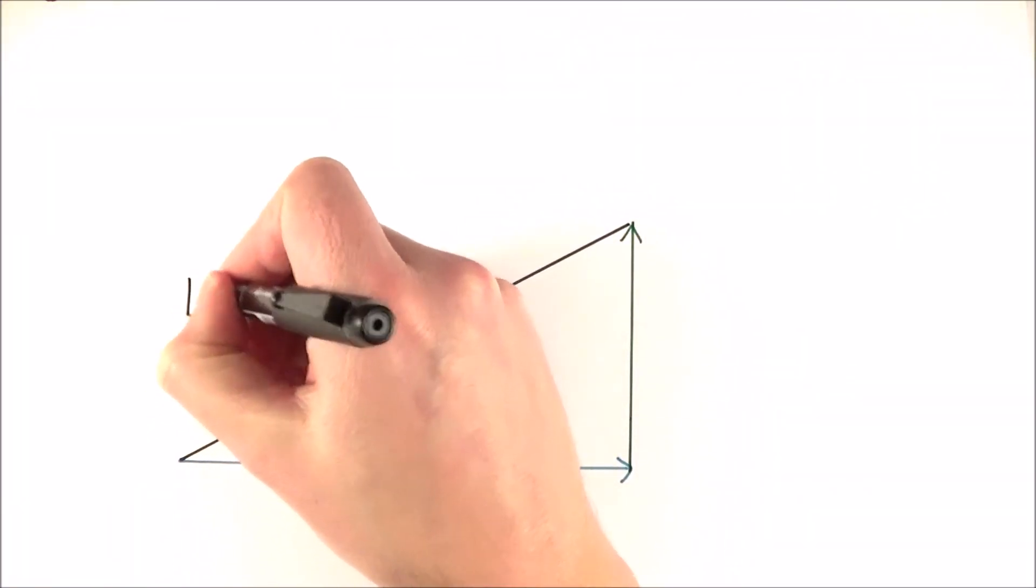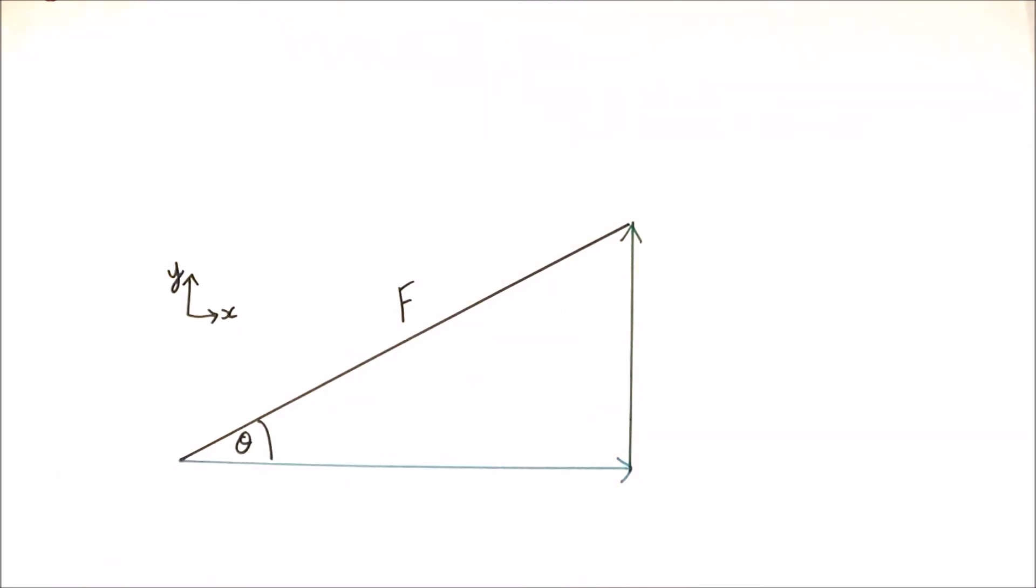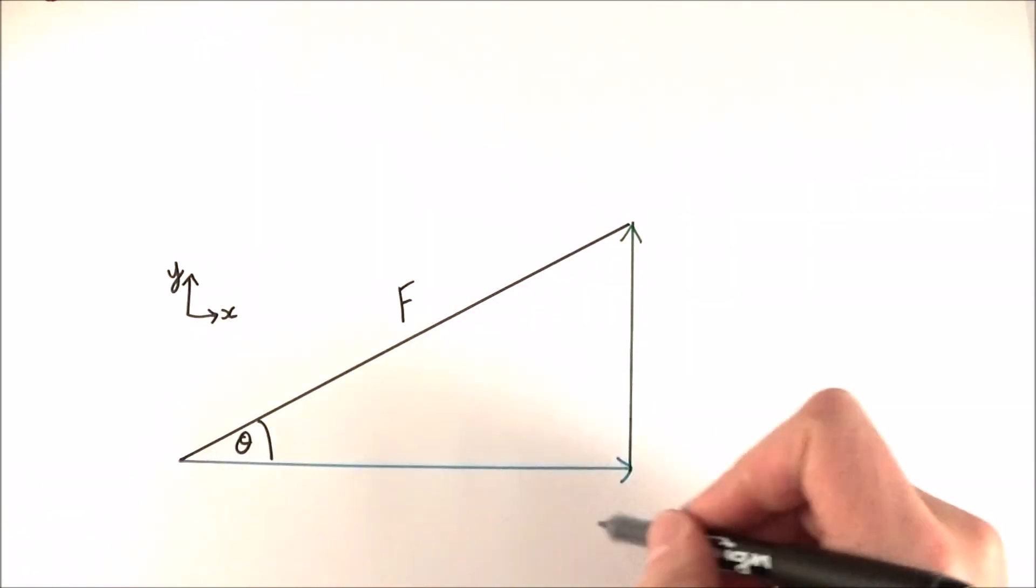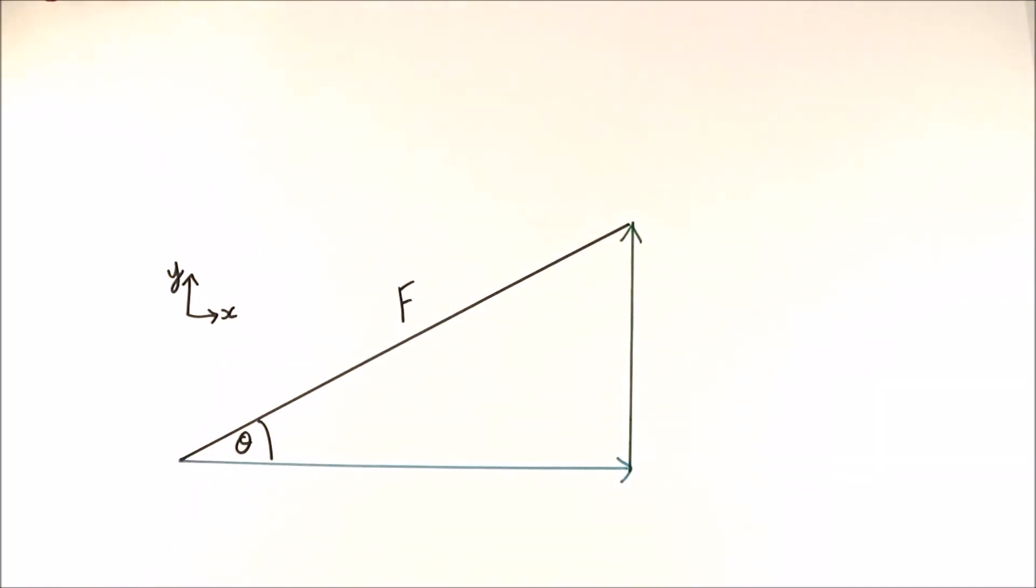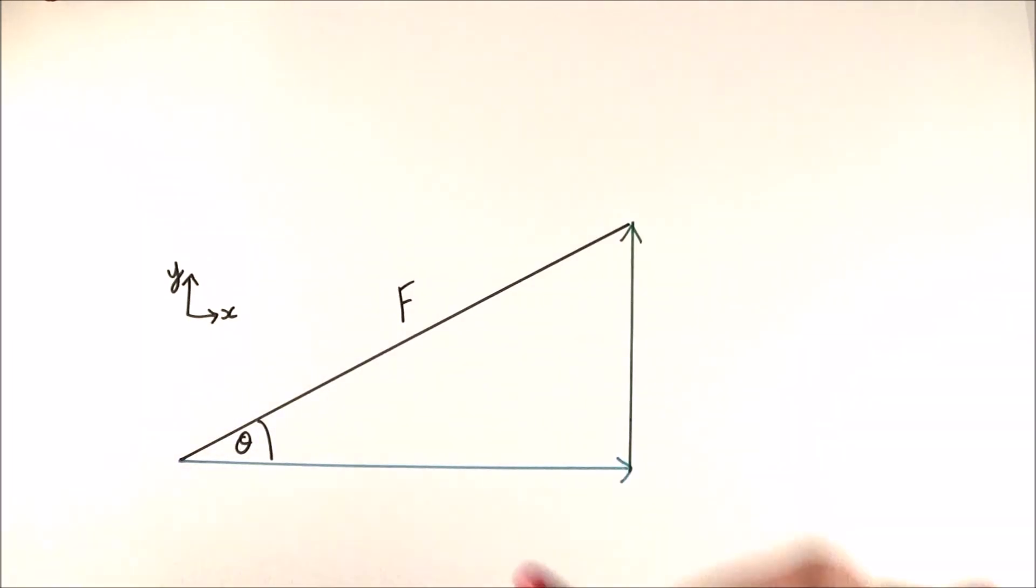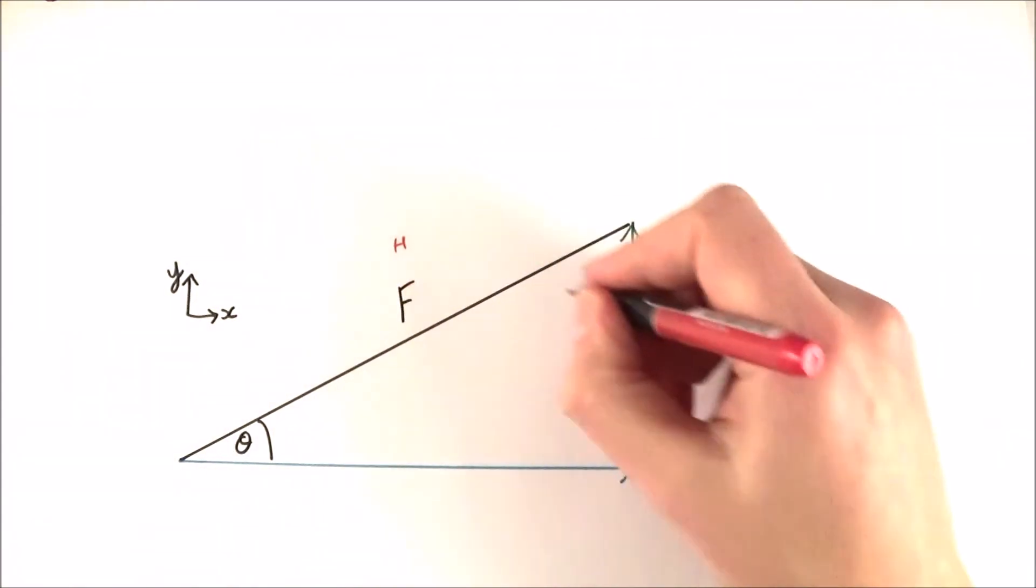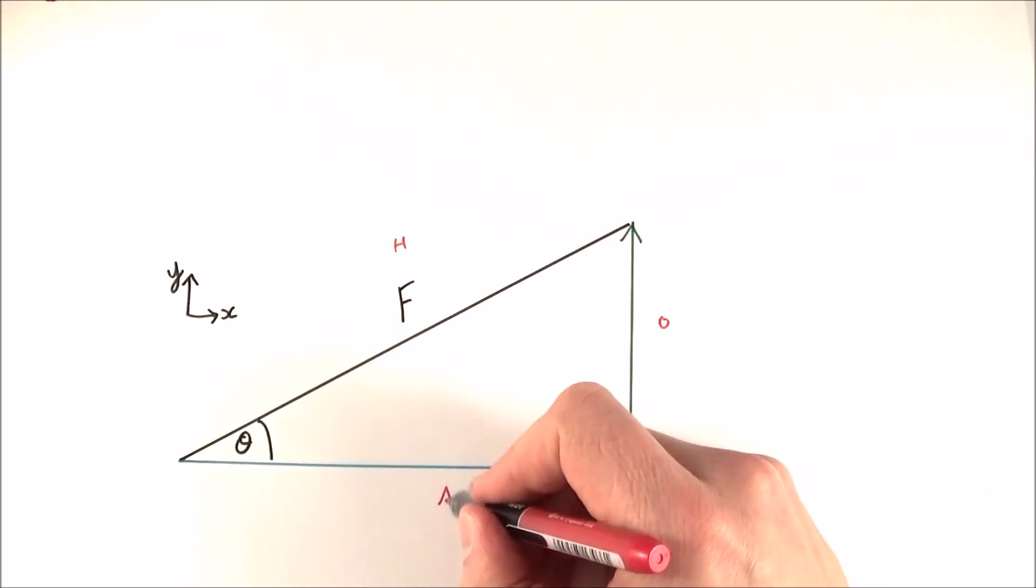And for convenience, I'm going to say that this is the x-plane, and that's a y-plane, a bit like on your graph. Or we could have said that that's a horizontal and the vertical distance. Now, thinking again back to our triangle, we have our hypotenuse, the opposite side, and the adjacent side.